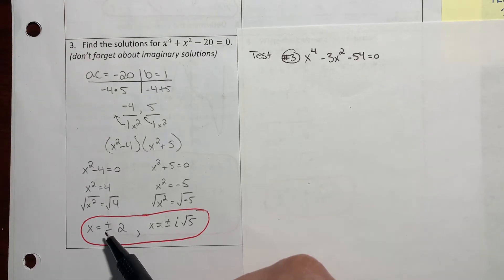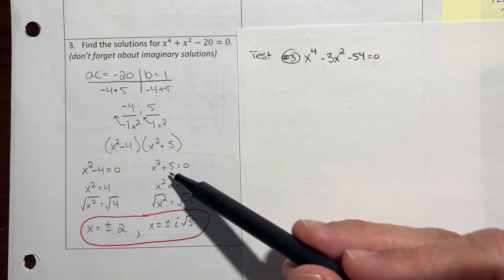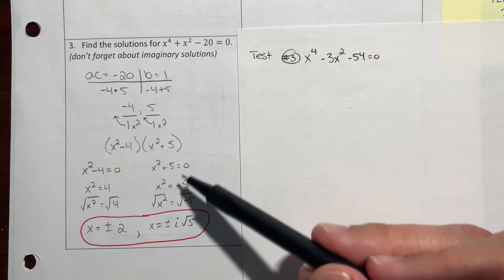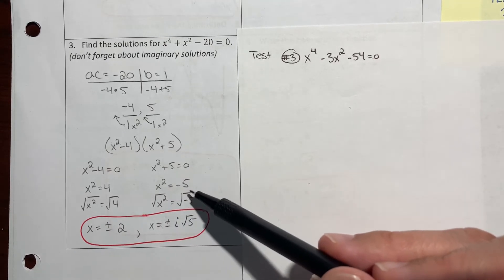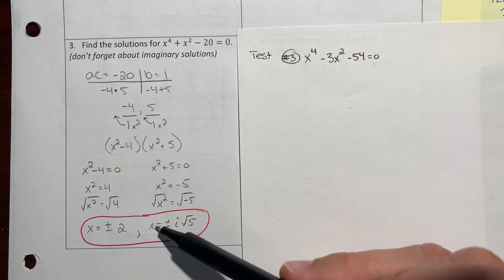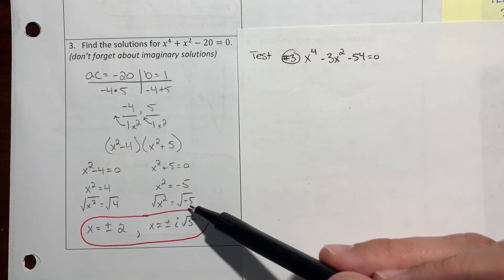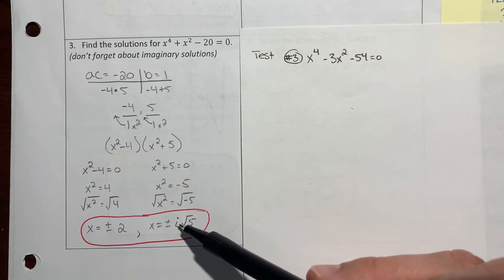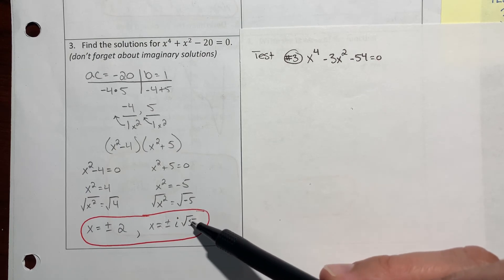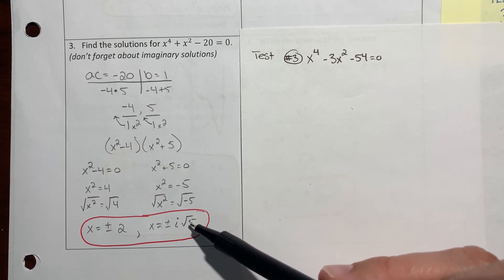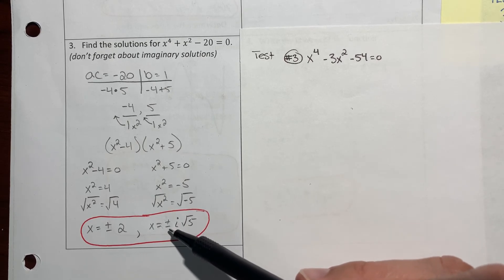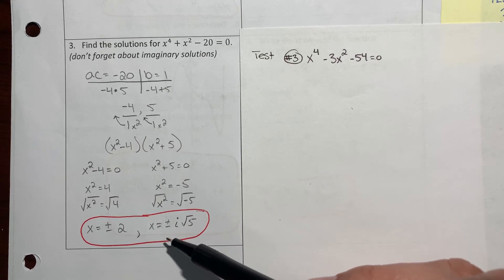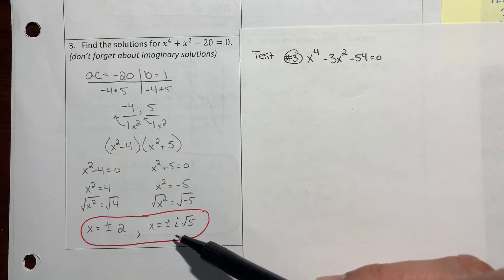Over here, five goes to the other side and it becomes negative. You square root each one. Square root of x squared is x. Now anytime you're square rooting a negative number that means you have an imaginary answer. So the first thing you do is get rid of that negative sign and put an i out front. That's why we have i radical positive five. But because you're doing a square root you got to put that plus minus at the front, so your answer here is x equals positive or negative i radical five.